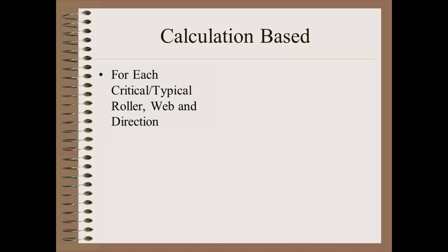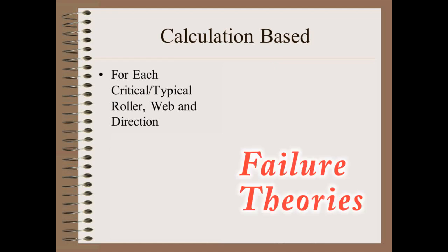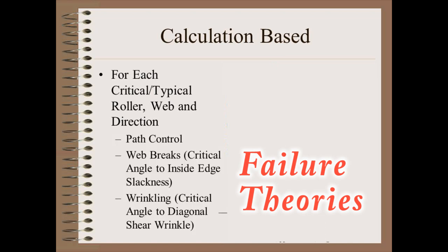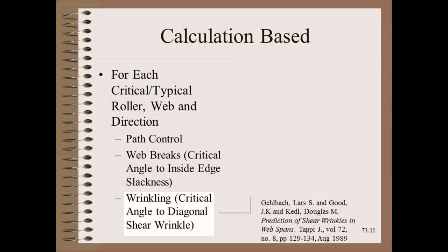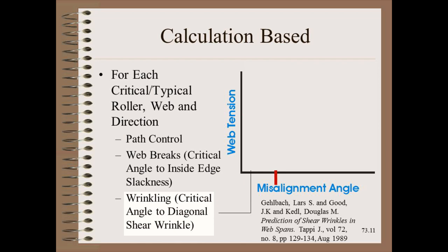The first method to determine outgoing alignment standards is by calculation based on some failure theory. We have several trustworthy theories that can calculate failure for path control, web breaks, and the most common type of wrinkling. Here we focus on the diagonal shear wrinkle caused by in-plane roller misalignment, first predicted by Dr. Good and others of the Web Handling Research Center nearly a quarter century ago. Looking at the graph of web tension versus misalignment angle, we see a failure curve: to the left of that curve, we will not be wrinkled; to the right, we are wrinkled.